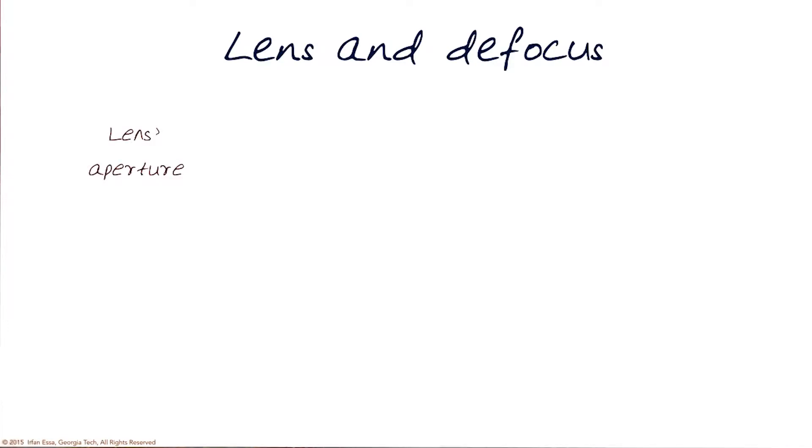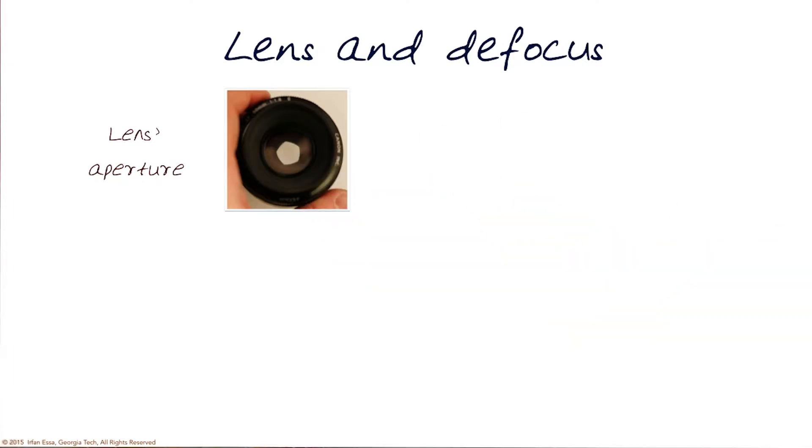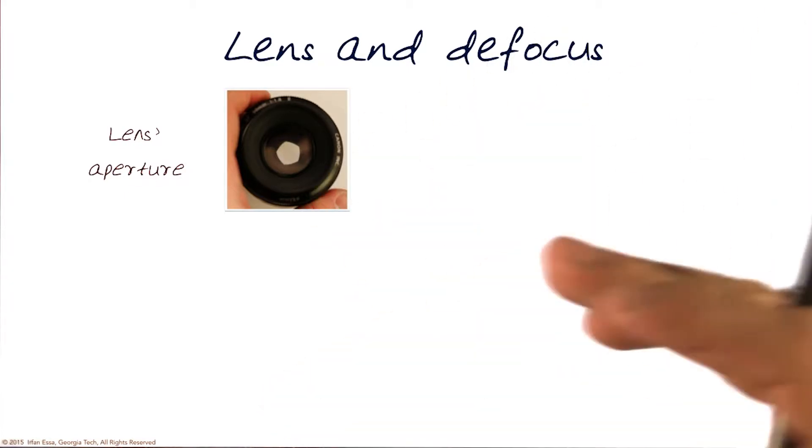Remember that when we have a lens like this, we have an aperture, the opening. The opening is the amount of area that actually goes through the aperture that hits the sensor after the shutter is open. The shutter controls the amount of time, the aperture controls the amount of light that enters.